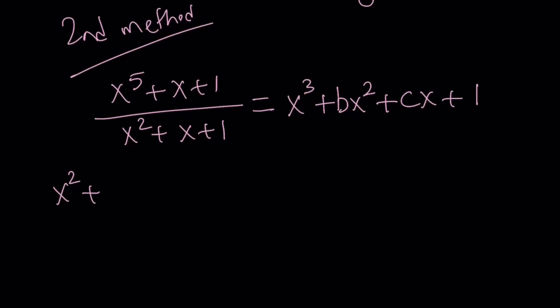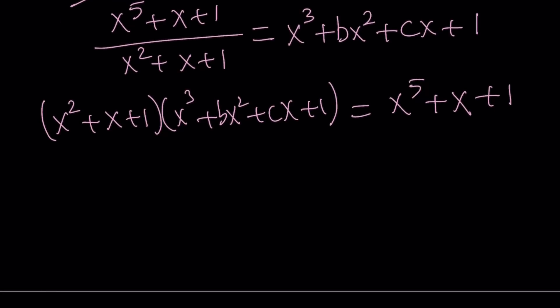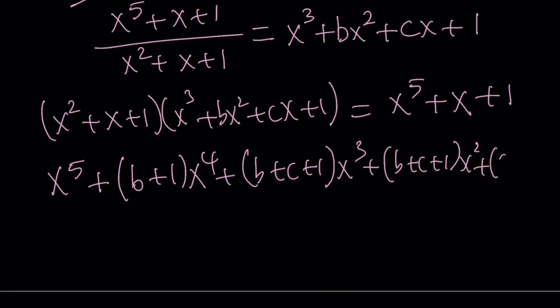That's going to give me x squared plus x plus one, multiply by x cubed plus bx squared plus cx plus one, and that is supposed to give me the numerator, which is x to the fifth plus x plus one. Now, if you distribute this, and I'm just going to give you the answer, you know, without further ado, you can write this as, when you multiply, you're going to get x to the fifth plus b plus one x to the fourth plus b plus c plus one x to the third plus b plus c plus one, a lot of repetition here, x squared plus c plus one x plus one. Awesome.